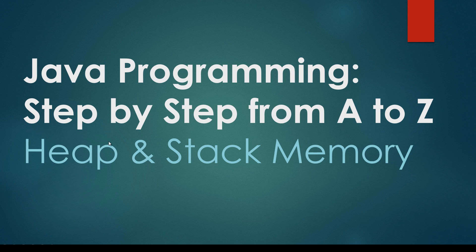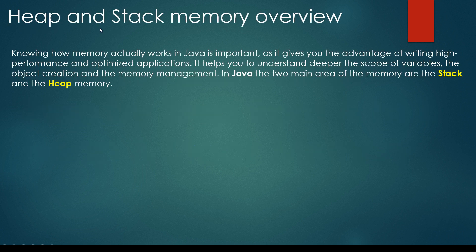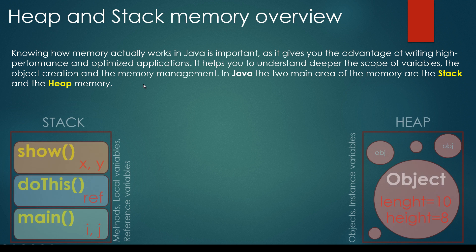In this lecture we are going to talk about the main differences between stack memory and heap memory. Knowing how memory actually works in Java is important as it gives you the advantage of writing high performance and optimized applications. It helps you to understand the scope of variables, object creation and memory management. In Java there are two main memory types: stack memory and heap memory.